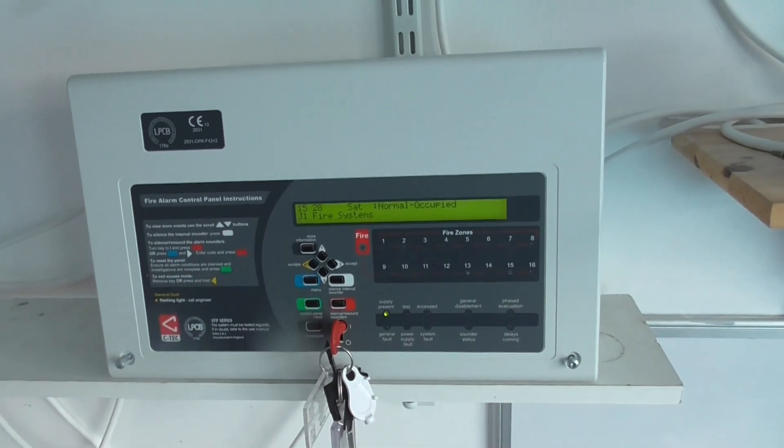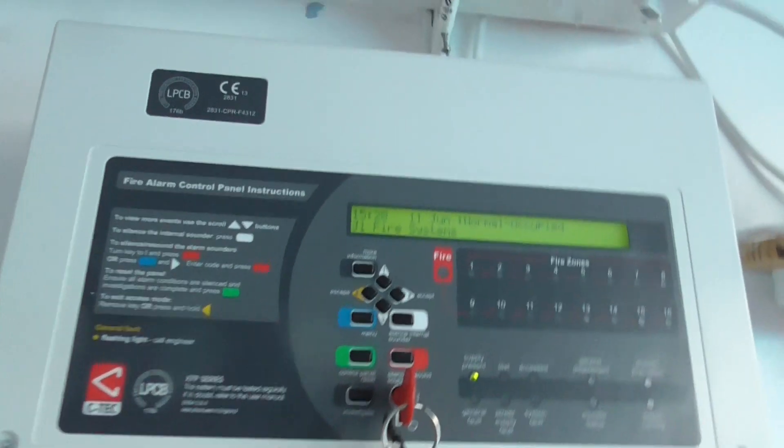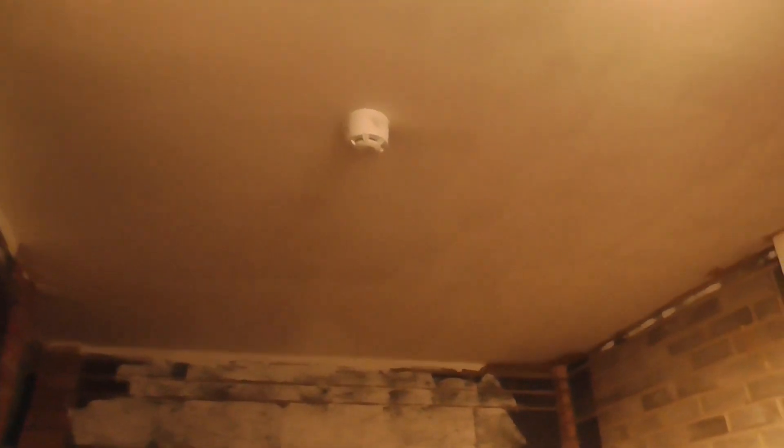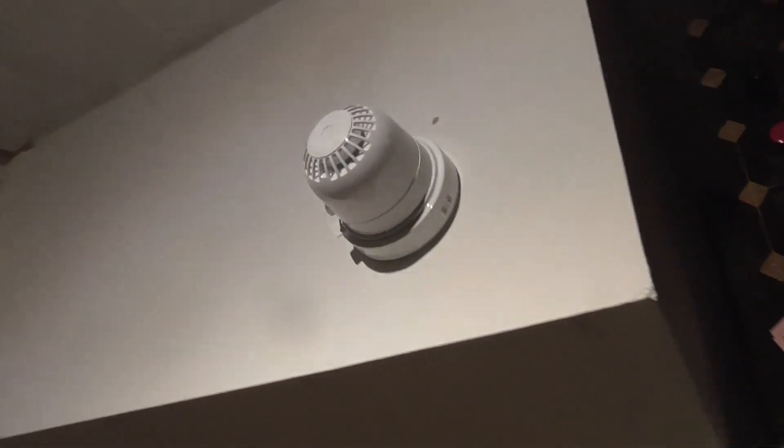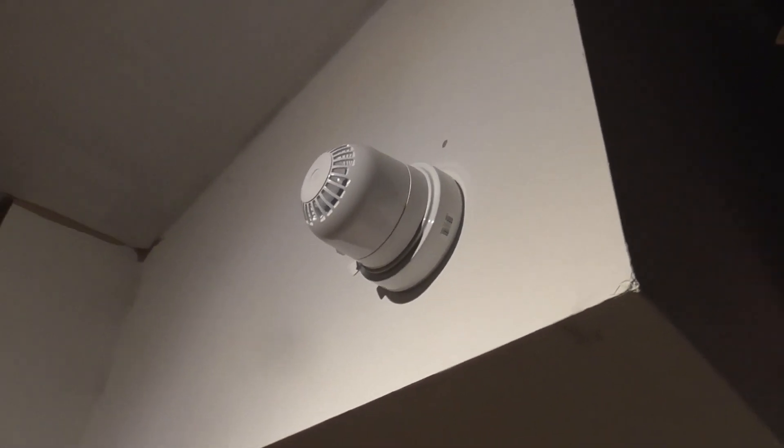We're now in the garage and as you can see we've still got the expander optical detector which we're going to be testing today because we haven't tested this one in a while. But if we look at this wall, you can notice that we now have an expander open area sounder. That is the new device that's been added to the system.